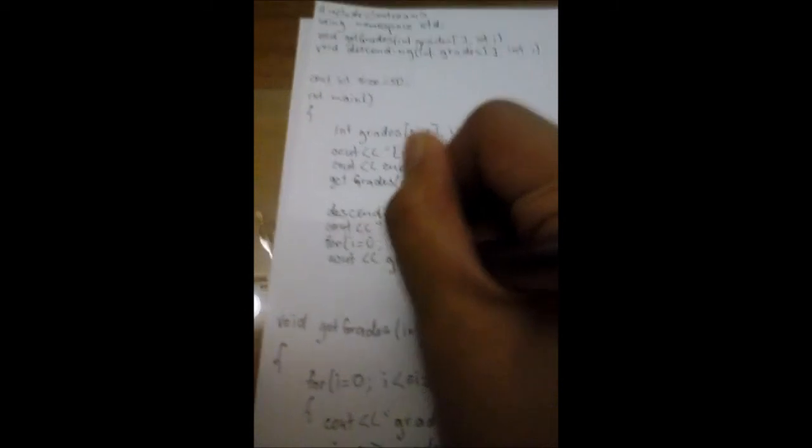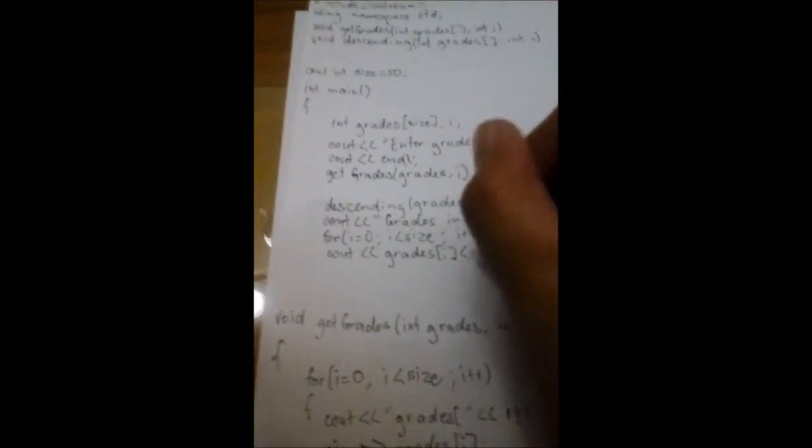So, you will also use here the for loop. Always, always use the for loop when you input, output, use arrays. Then, say cout your list in descending order. That's the end of our main.